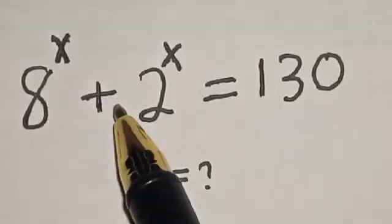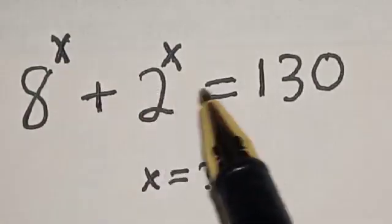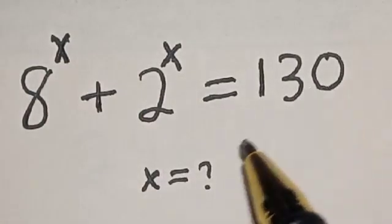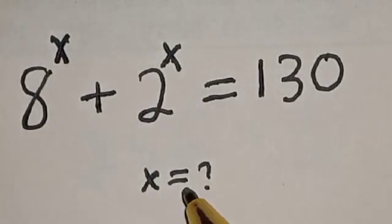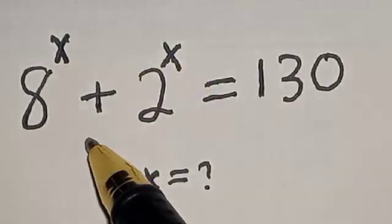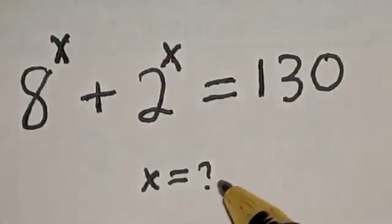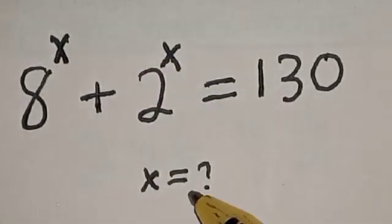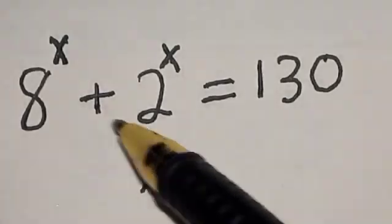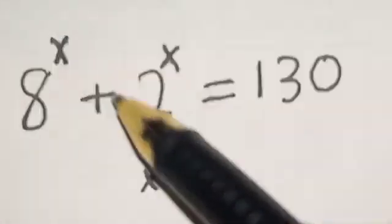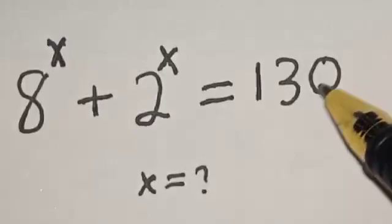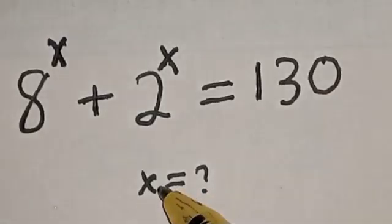8 raised to power s plus 2 raised to power s is equal to 130. What is the value of s? Hi everyone, welcome to my class. In this class we quickly want to find the value of s from this equation: 8 raised to power s plus 2 raised to power s is equal to 130.